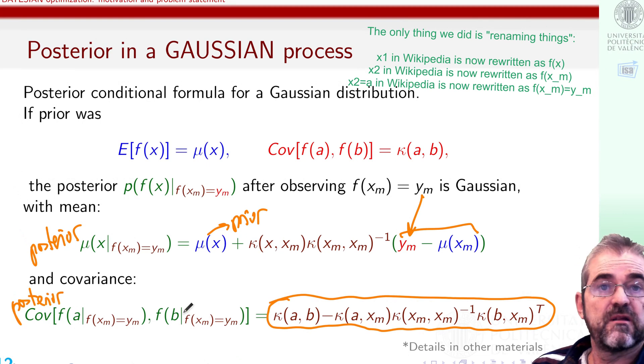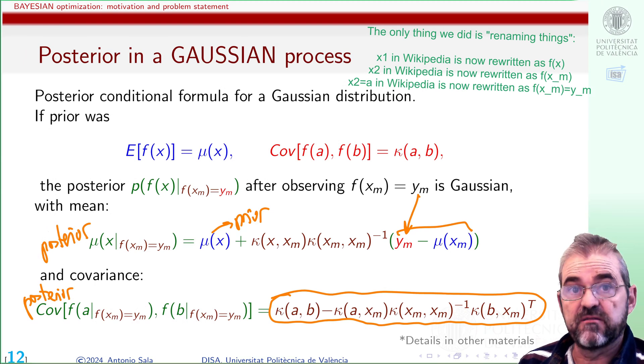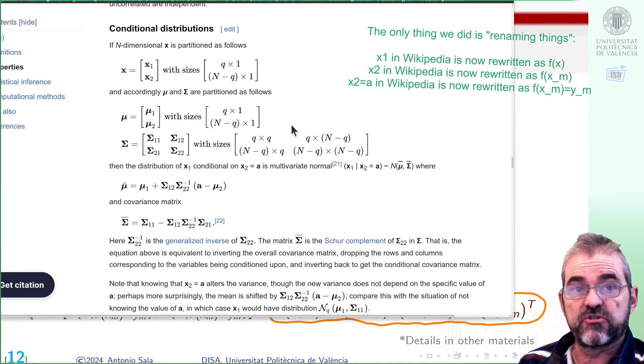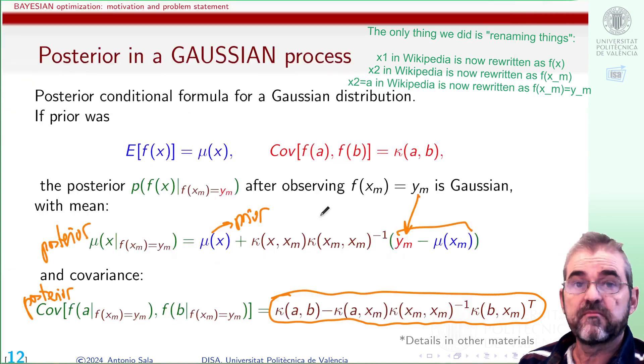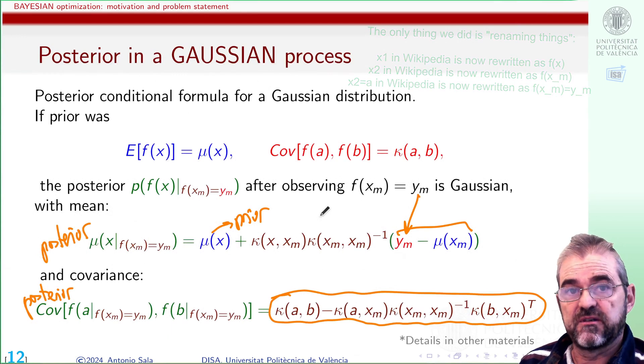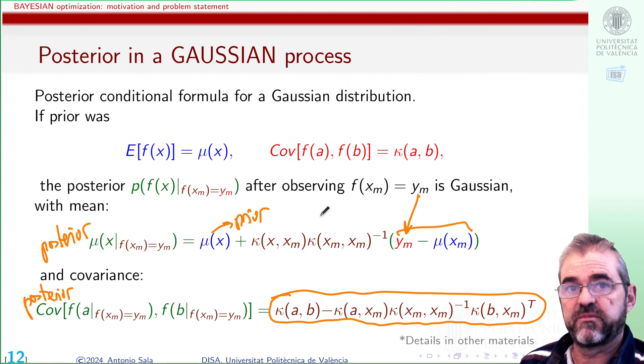It can be proved that the posterior covariance between two points has this formula. Details should be in other materials. If this is not new to you, you will understand that it's just changing notation from the Wikipedia formulae on the normal multivariate distribution. If this is absolutely new to you, just don't worry, because this is just an outline.